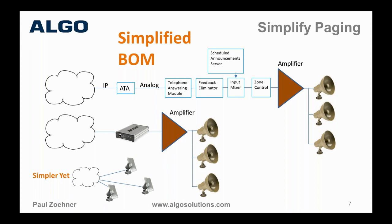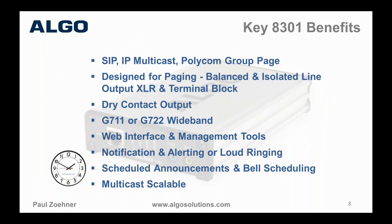Some of the key features of the 8301: it supports SIP, IP multicast, Polycom Group Page, among others. When we say SIP, it can actually be registered with up to 50 SIP extensions — and if we had time I could explain why that is and how it's used for zoning. This device was designed specifically for paging, so you have a balanced and isolated line output with XLR and terminal block connectors for twisted pair. You also have line-level compensation and automatic gain, so you get very consistent audio levels out, which aren't dependent on which phone is sending the transmission or who is using it. You get a dry contact output, required by some amplifiers to mute music or activate instead of using VOX, which sometimes has a delay.